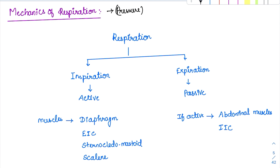Respiration is a two-part process. One is the inspiration process, another is expiration. Inspiration is an active process — active means it requires energy. The lung expands during inspiration and contracts during expiration. Expiration happens passively; it does not need any energy. It is just the recoil of the lung causing expiration.